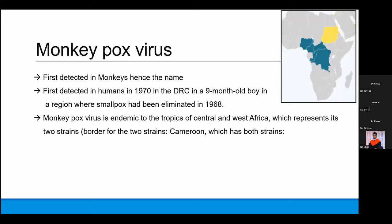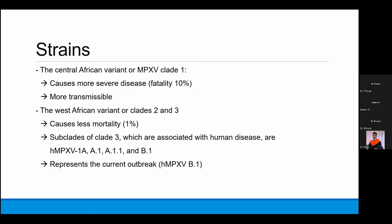Monkeypox is endemic to the tropical regions of Central and West Africa, and these two regions represent its two strains. Cameroon, which straddles both regions, has both strains within its borders. The Central African variant, or monkeypox clade 1, is the more severe and more fatal variant, with fatality rates of 10%, and is more transmissible. The currently circulating variant is the West African variant, which causes less mortality, is less transmissible, and less severe.